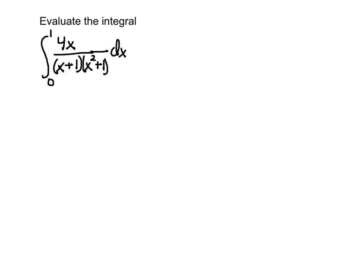We evaluate the integral from 0 to 1 of 4x over the product of x plus 1 times x squared plus 1. We recognize it as a rational function. If we can decompose it into simpler fractions that we can separately integrate, that would be desirable. We have to use partial fraction decomposition.